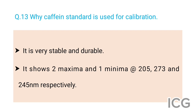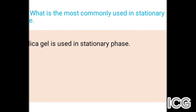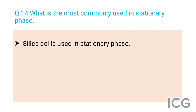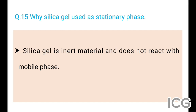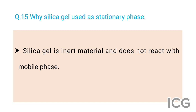The next question is: what is the most commonly used stationary phase? The answer is silica gel is used as the stationary phase. The next question is: why is silica gel used as stationary phase? The answer is silica gel is an inert material and does not react with the mobile phase, which is why it is used as the stationary phase.